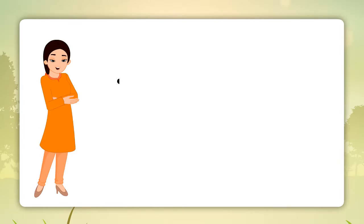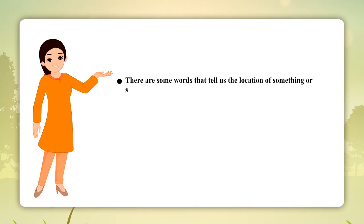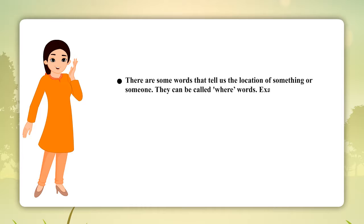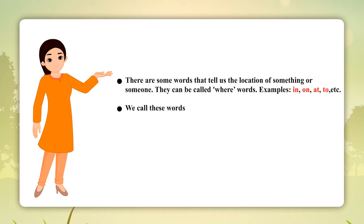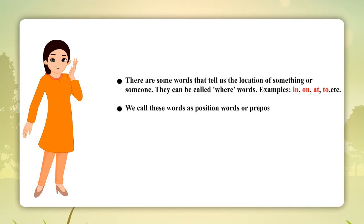Prepositions. There are some words that tell us the location of something or someone. They can be called where words. Examples: in, on, at, to, etc. We call these words position words or prepositions.